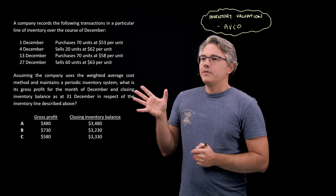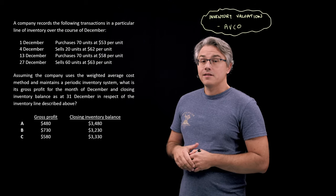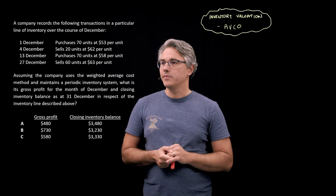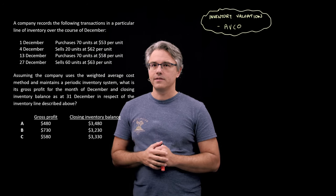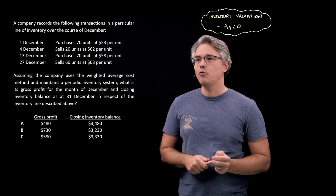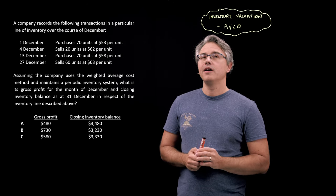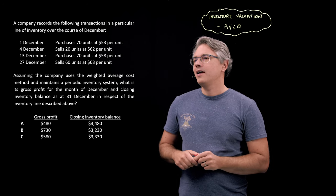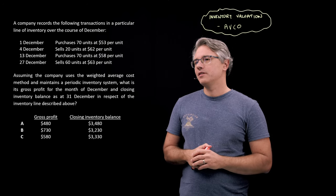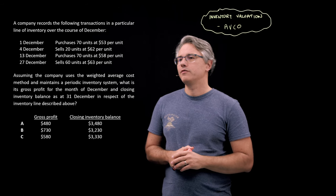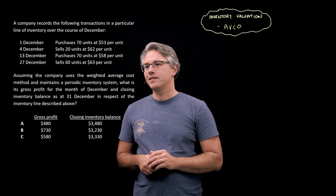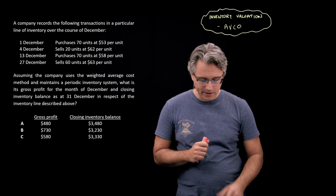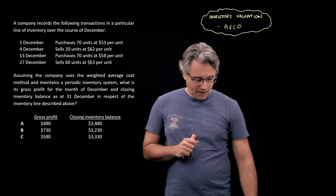We've got a company that's making purchases and sales of a single line of inventory over the course of a single month. Assuming the company uses the weighted average cost method — or as it is often known, AVCO — and maintains a periodic inventory system, what is its gross profit for the month of December and closing inventory balance as at the 31st of December in respect of the inventory line described above?